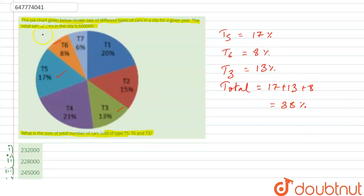Now we need to find the number. This is the percentage, so now how many in numbers? Total sales is 6 lakhs, that's 600,000. Now we calculate: 38 by 100 into 6 lakhs. Those two zeros cancel, so 60,000 into 38.